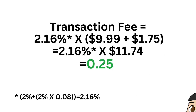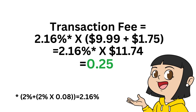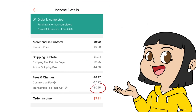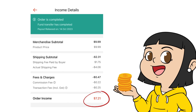Based on our sample transaction, Product Y is $9.99 plus the buyer's shipping fee, and we multiply by 2% for the transaction fee. Then that result is multiplied by the current GST of 8%. The final transaction fee is $0.25.